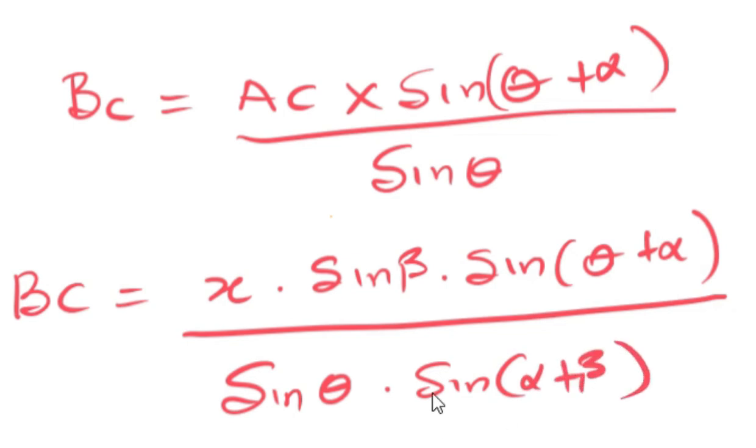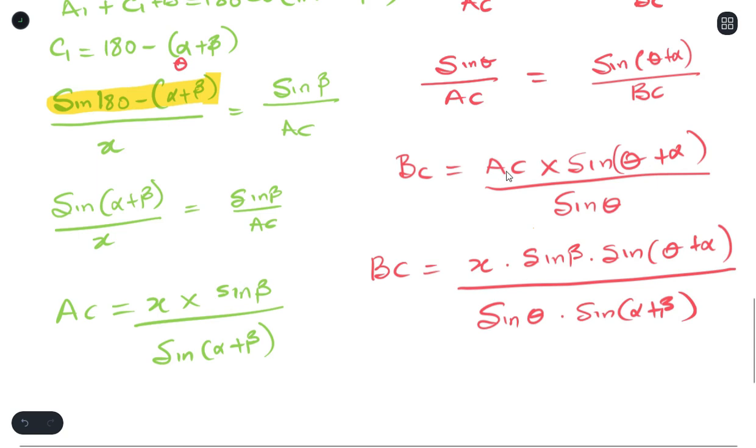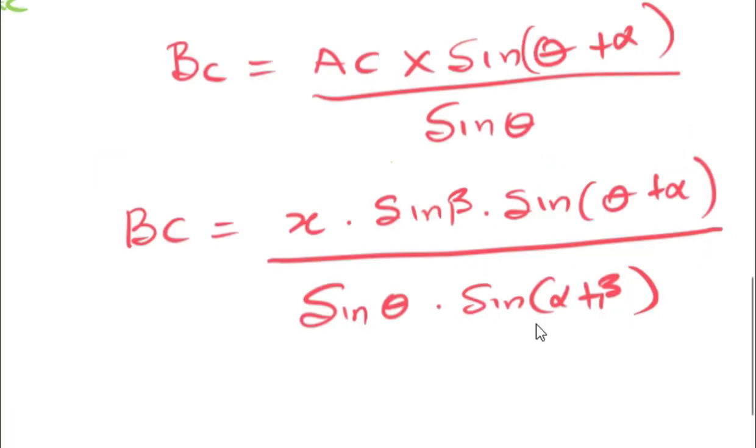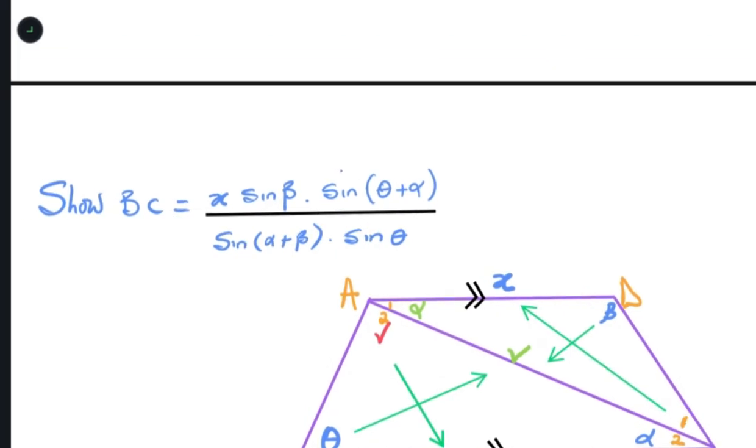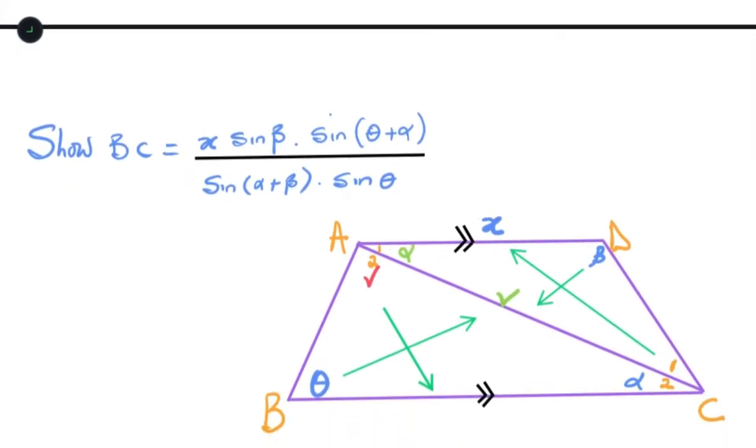In the final step, we just replace our value for AC. Therefore, your BC will be x times sine beta times sine theta plus alpha over sine theta times sine alpha plus beta. And that is exactly what they asked us to prove, as you can see.